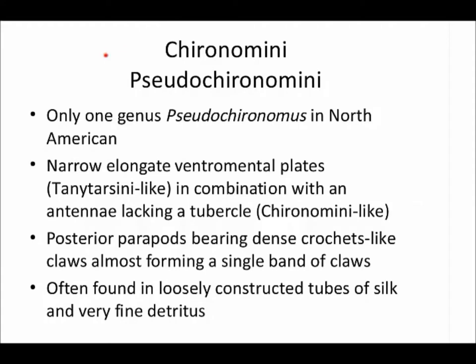The Pseudochironomini — if you identify to this tribe, you've essentially identified to genus, as there's only one genus in North America: Pseudochironomus. It's characterized by narrow elongated ventral mental plates like Tanytarsini, combined with antennae that do not arise from a tubercle, like Chironomini. A good character visible under the dissecting scope is their posterior parapods, which form a dense crochet-like set of claws. In samples, you'll often find them in loosely constructed tubes of silk and very fine detritus.